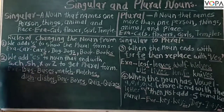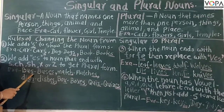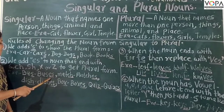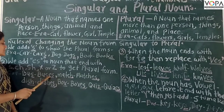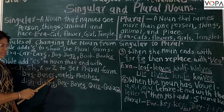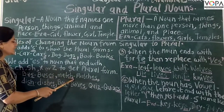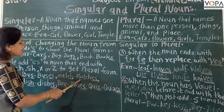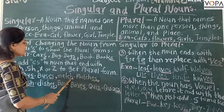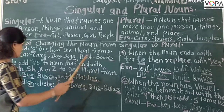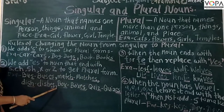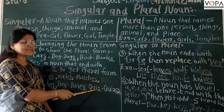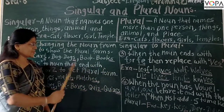For example: bus — buses. We add ES here. M-A-T-C-H — ES: match, matches. Dish — dishes. Box — boxes. Wheels — freezes.